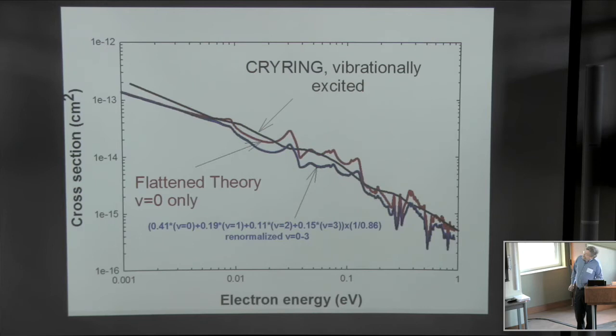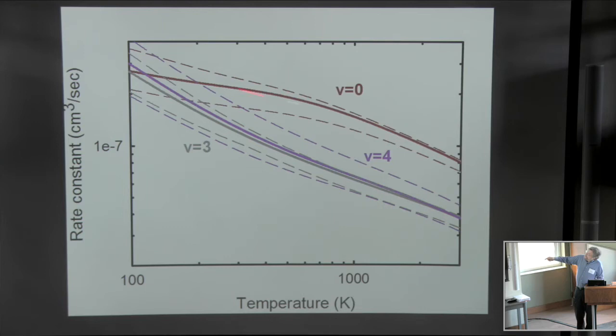This is the rate coefficient again for v=0, now shown with v=3 and v=4. You can see v=3 and v=4 are very similar over the whole range of electron temperatures. But v=0 is greater than those over most of the temperature range above room temperature.